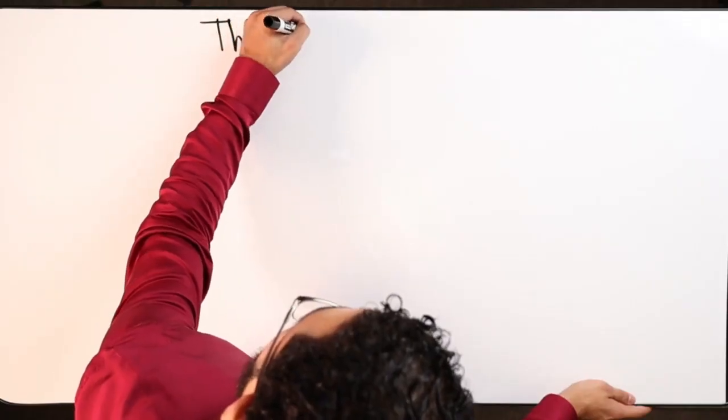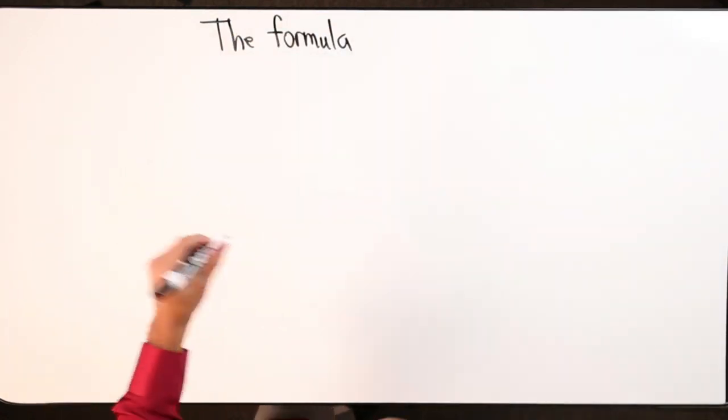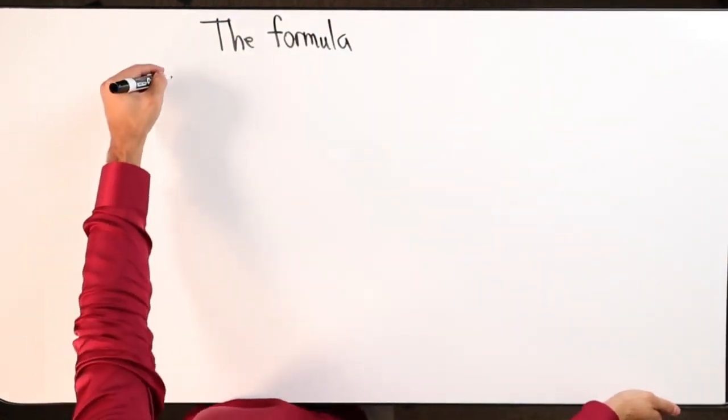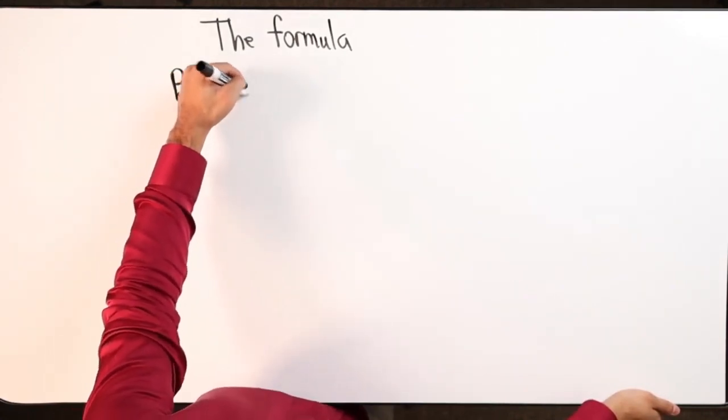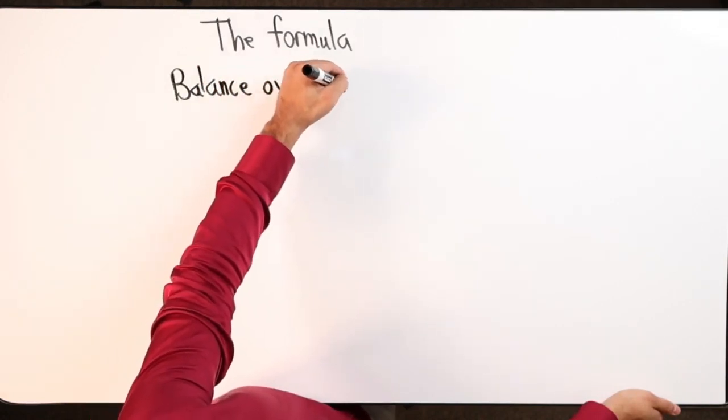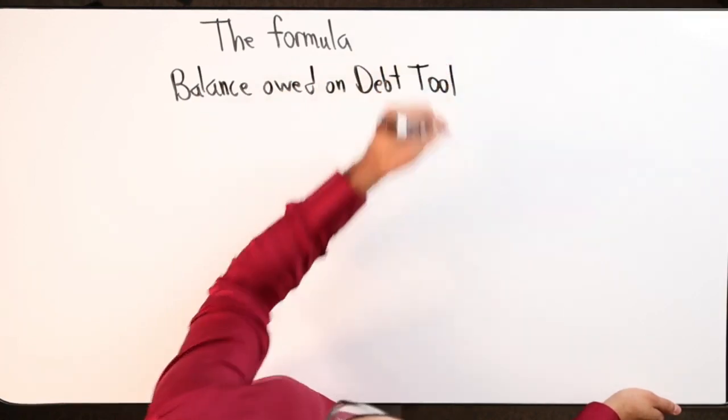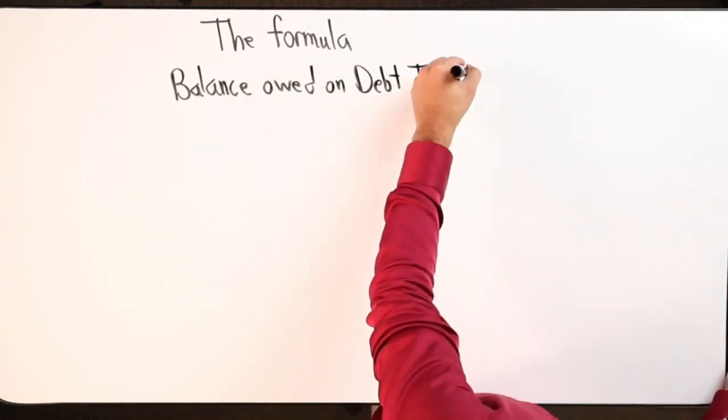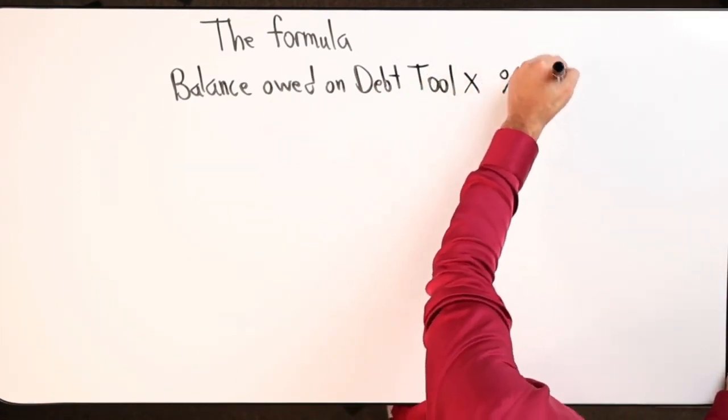So the formula—I'm just going to make sure we all get this—it doesn't change, it's the same all the time. You take the balance owed on your debt tool and multiply it by the interest rate. You're going to get a number.